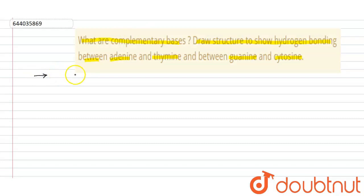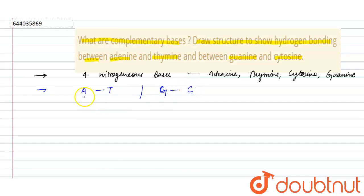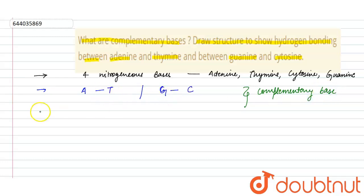Firstly, what are complementary bases? As we know that in DNA there are four nitrogenous bases: adenine, thymine, cytosine, and guanine. Each base can only bond with one other — adenine bonds with thymine, while guanine bonds with cytosine. Adenine and thymine, and guanine and cytosine, are both complementary bases, and their base pairing is known as complementary base pairing.